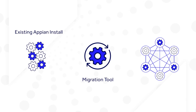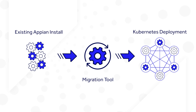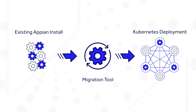Appian makes the switch to a Kubernetes deployment simple with a provided migration tool. Both migrated and fresh installations are supported in your data center or in one of the major cloud providers. Regardless of which service it's deployed on, Appian on Kubernetes provides Appian customers with enhanced resiliency and sets the foundation for automated scaling.